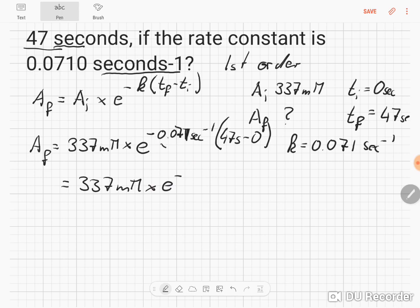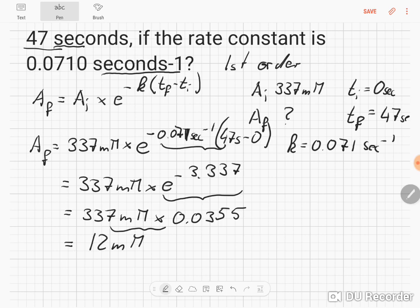Calculating 0.0771 times 47 gives 3.337. Then e to the minus 3.337 equals 0.0355. Finally, 337 millimolar times 0.0355 gives roughly 12 millimolar.